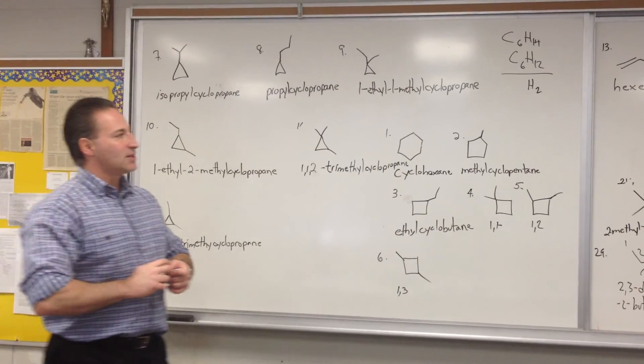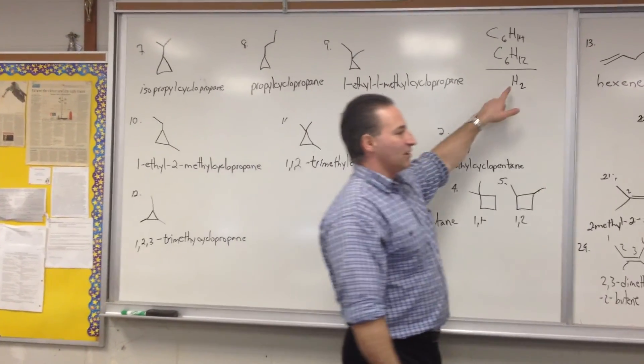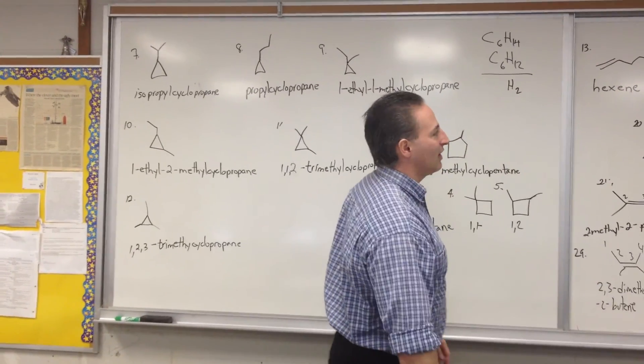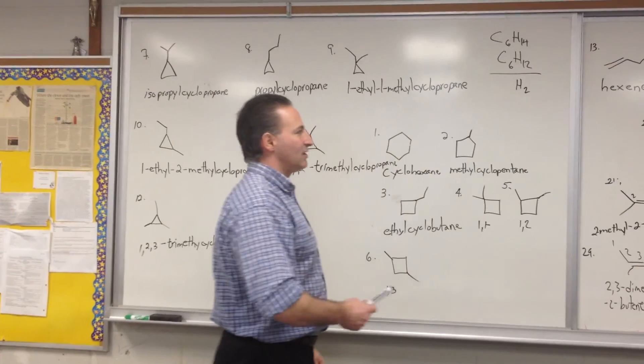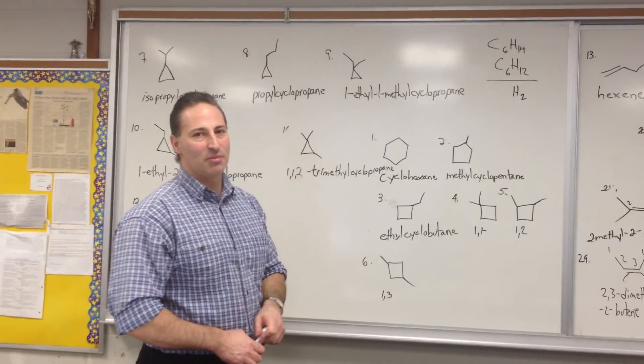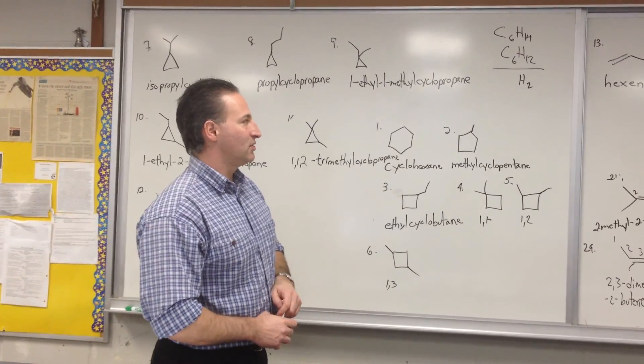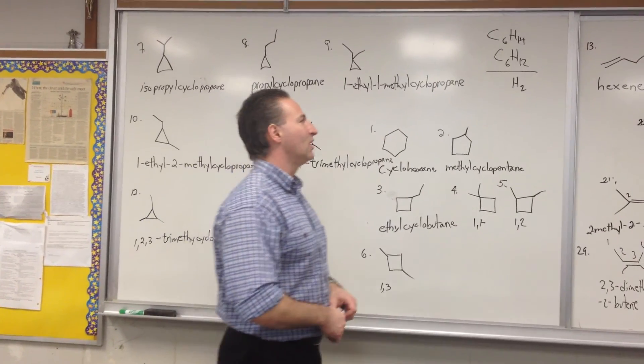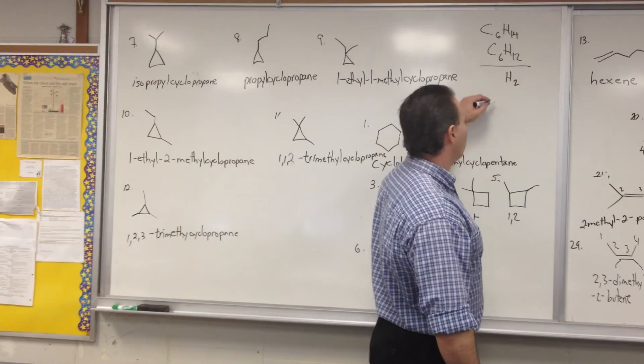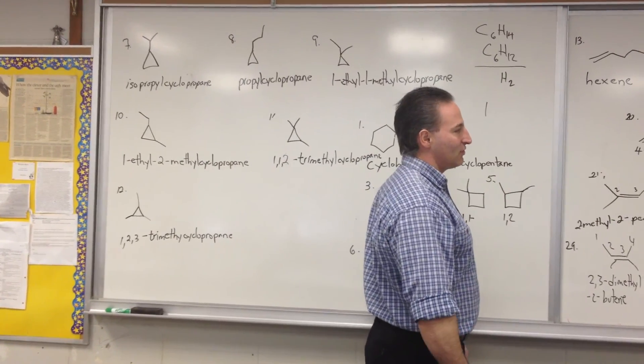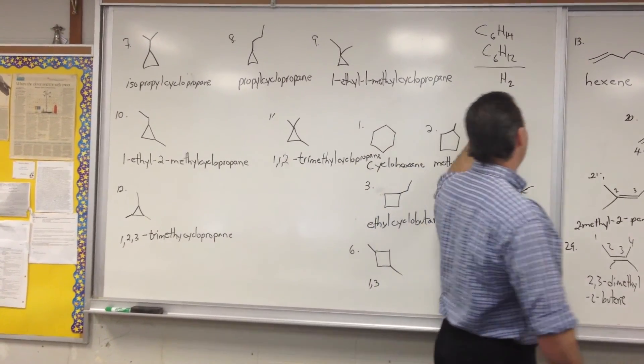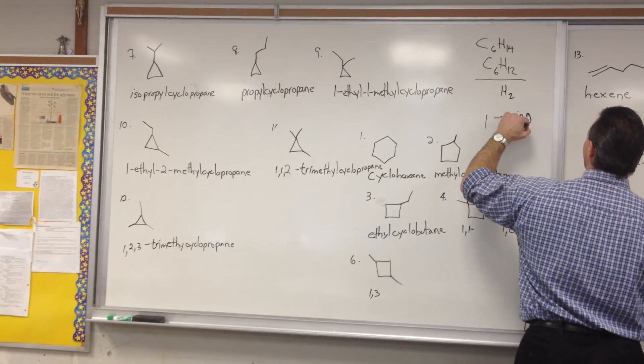So this molecule has two hydrogen atoms missing, and we call that the hydrogen deficiency. If you take the hydrogen deficiency and divide it by 2, you get the index of hydrogen deficiency. And for every value of 1 in the index of hydrogen deficiency, you either get a ring or a double bond.